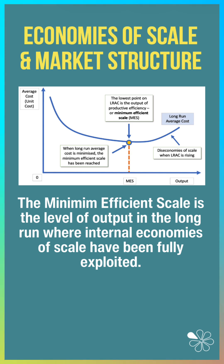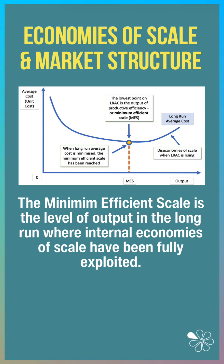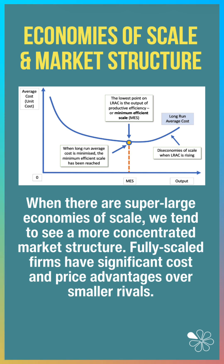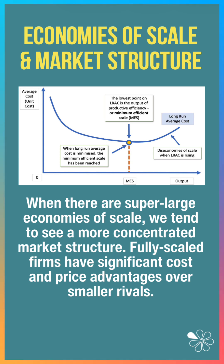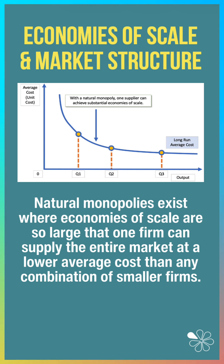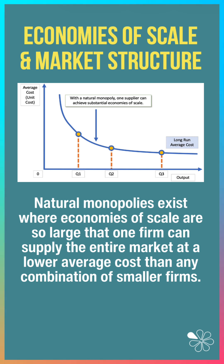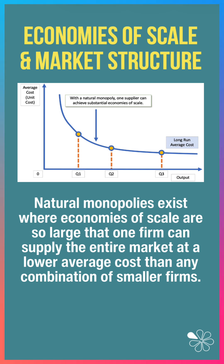The minimum efficient scale is the level of output in the long run where internal economies of scale have been fully exploited. When there are super large economies of scale, we tend to see a more concentrated market structure. Fully scaled businesses have significant cost and price advantages over smaller rivals. The extreme example of this is a natural monopoly, where the economies of scale are so large that one firm can supply the entire market at a lower average cost than any combination of smaller firms.